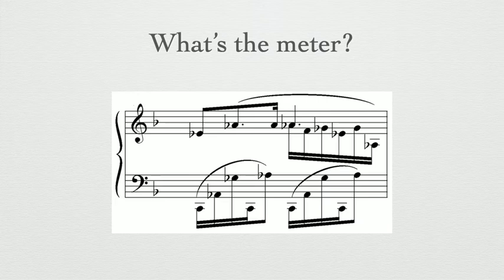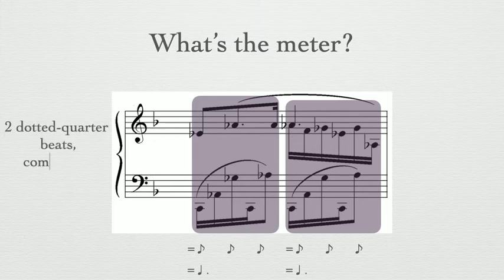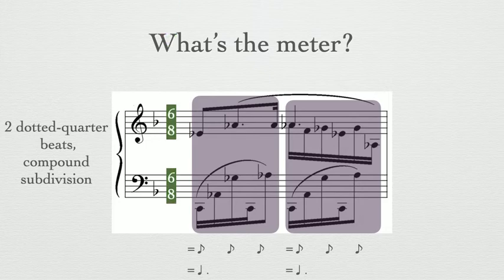What's the meter? Pause now and take your time. You should have found these 2 beamed groups, which each equal 1 dotted quarter note in duration. With 2 dotted quarter beats in compound subdivision, you should have gotten 6/8 meter.